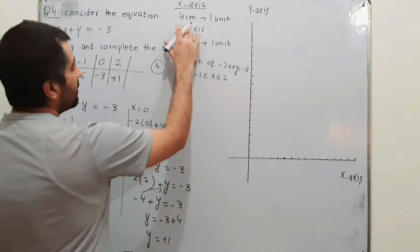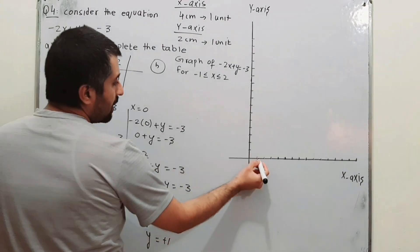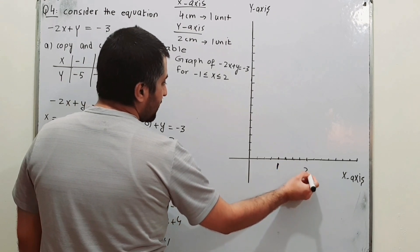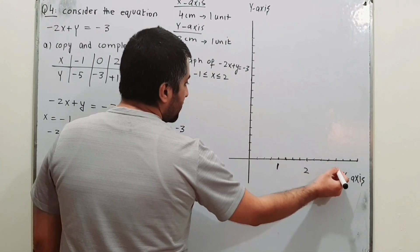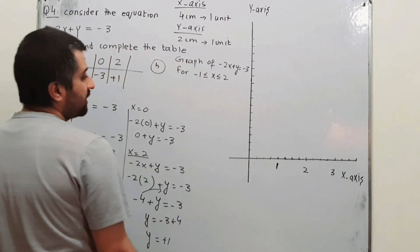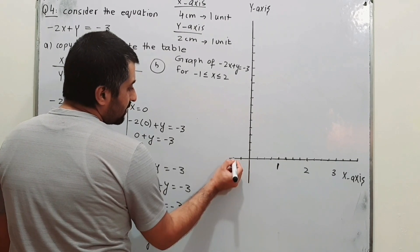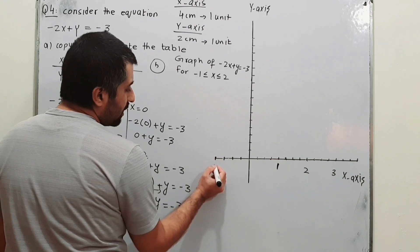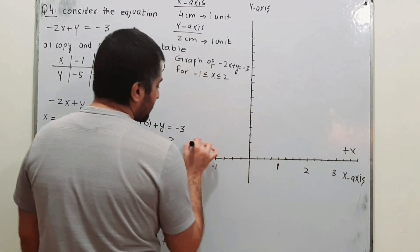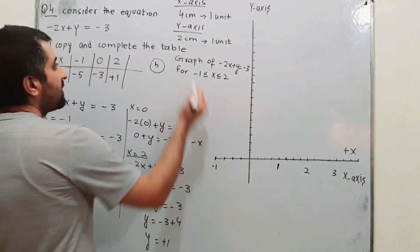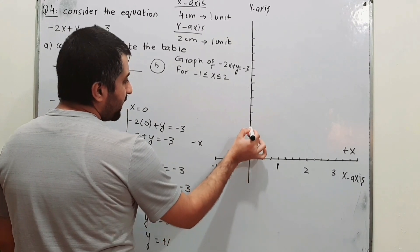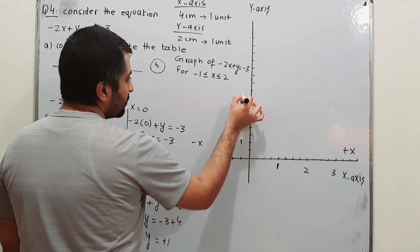Setting up the graph: on the x-axis, 4 centimeters equals 1 unit, so each unit spans 4 centimeters in both the positive and negative directions. On the y-axis, 2 centimeters equals 1 unit, marking intervals in both positive and negative directions accordingly.